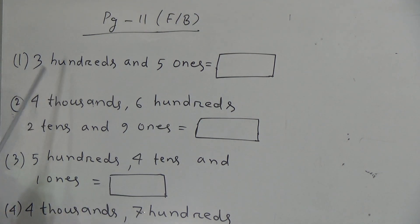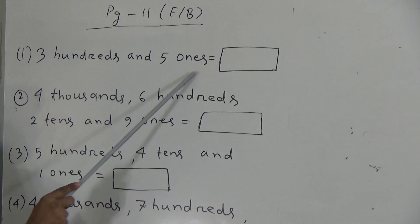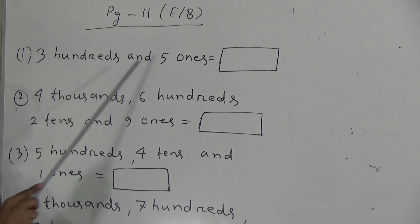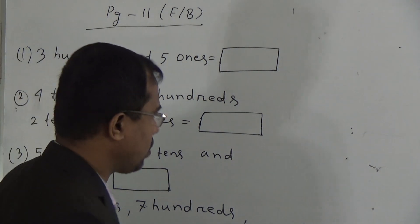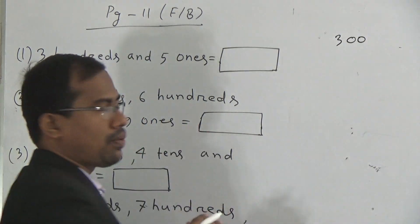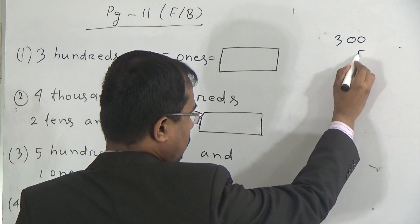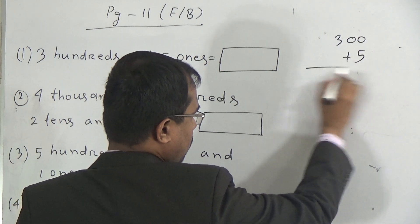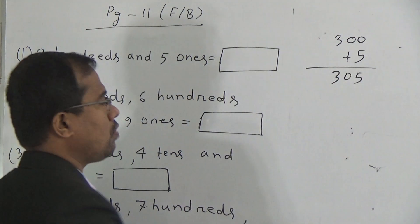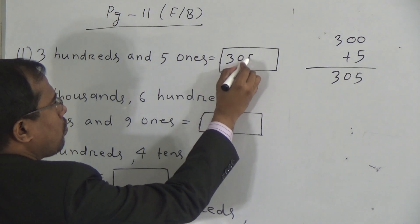First one is: 300 and 5 ones is equal to what? We have to add 300 with 5 ones. 300 means 3, 0, 0 and 5 ones means 5 × 1 = 5. If we add these two numbers, then it will be 305. So the answer of fill-in-the-blank number 1 will be 305.